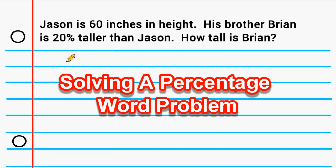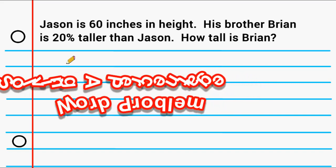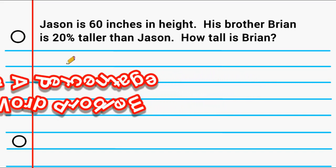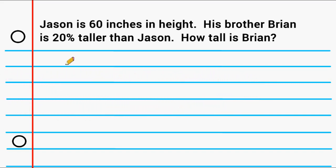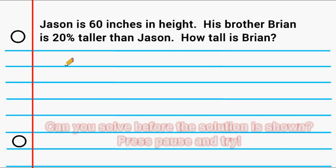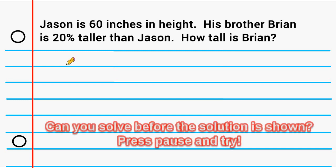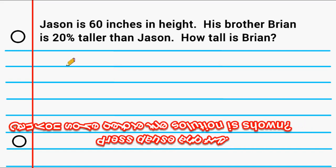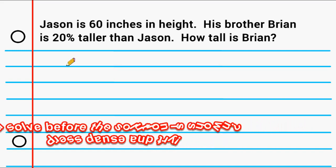This is Mr. Masonette, and we have a word problem here involving percentage. Now some word problems require you to find the percentage of a given fraction or something like that, but this word problem actually provides the percentage and we have to use that to figure out some other information in the problem. The problem reads that Jason is 60 inches in height, and his brother Brian is 20% taller than Jason. How tall is Brian?